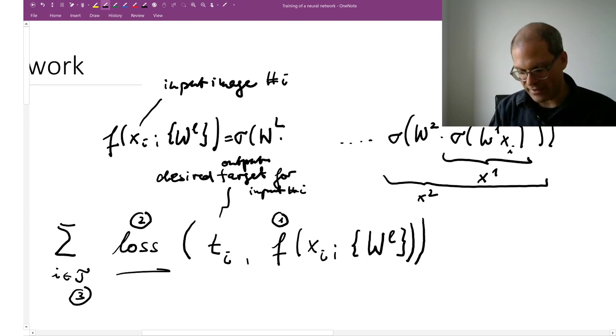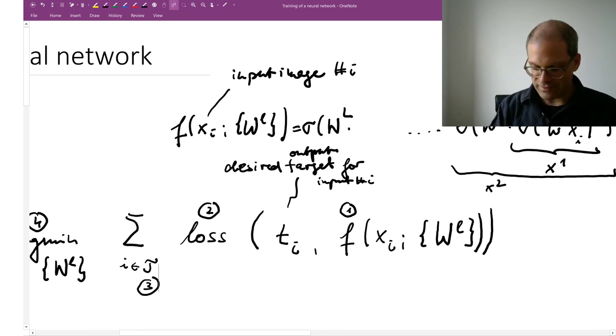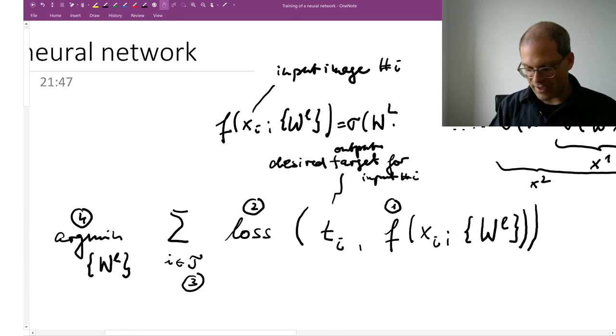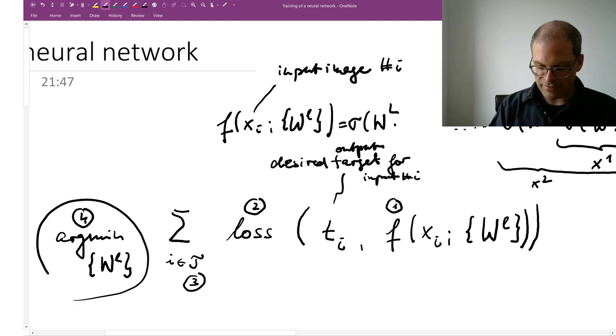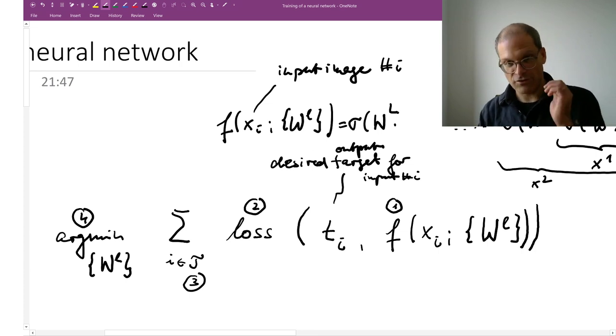The discrepancy between what I should have found and what I did find is measured by the loss. This loss is summed over all images in my training set, and at train time I'm trying to minimize this empirical loss by finding a good set of parameters. This is train time.